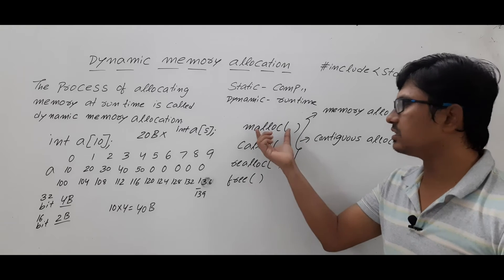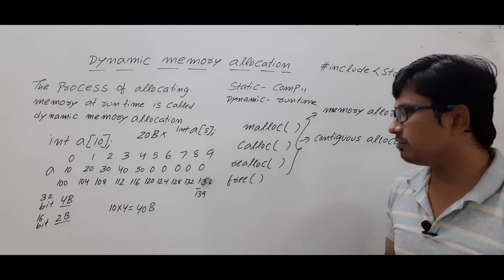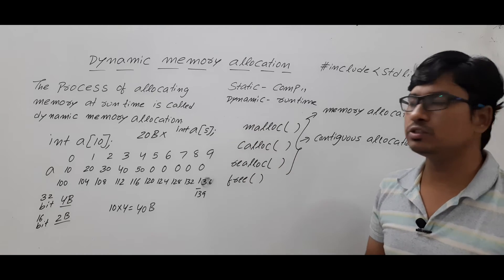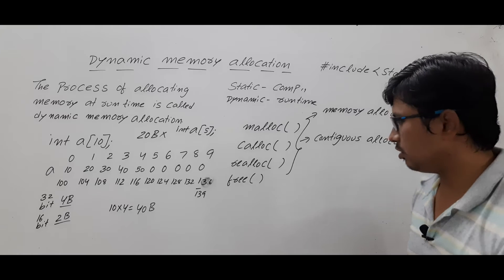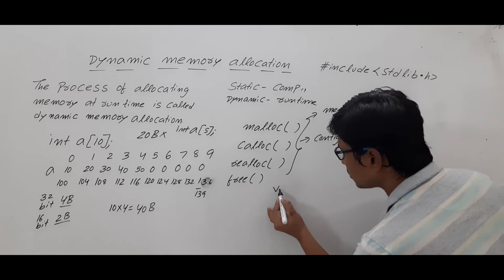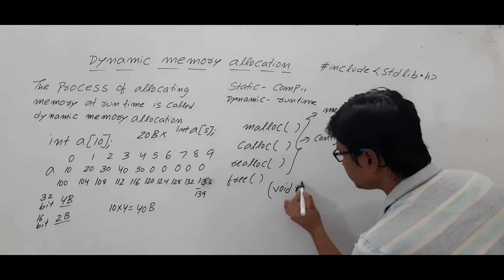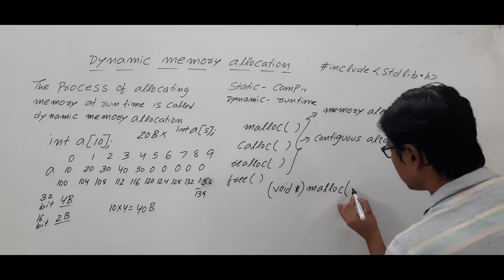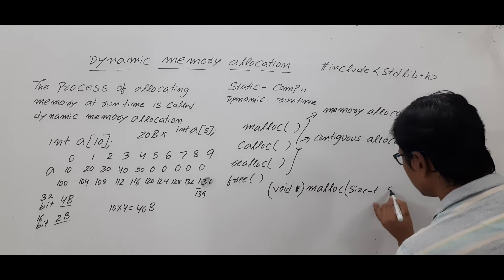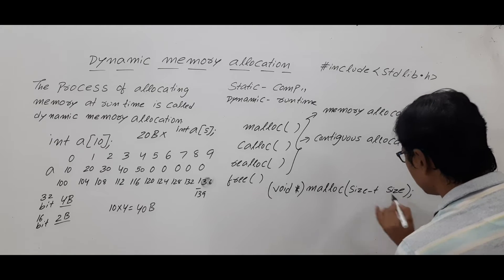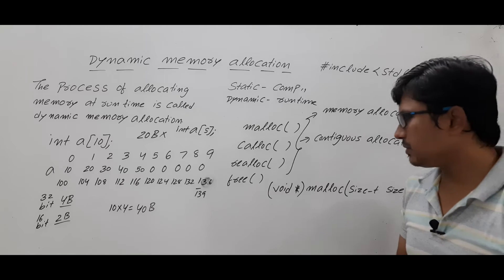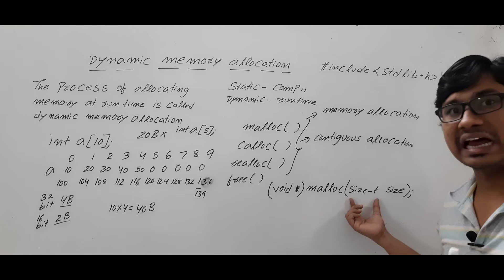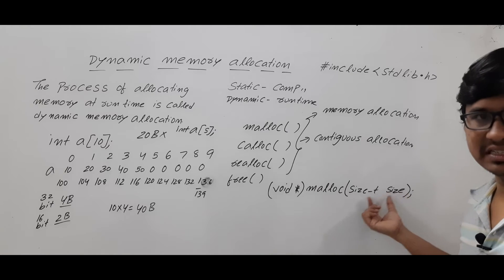Now let me discuss the generalized syntax of malloc, then I will discuss a few interesting points related to calloc so you can distinguish between malloc and calloc. In the malloc syntax, you specify size_t — which is an unsigned int — as the size parameter, indicating how much memory you want to allocate.